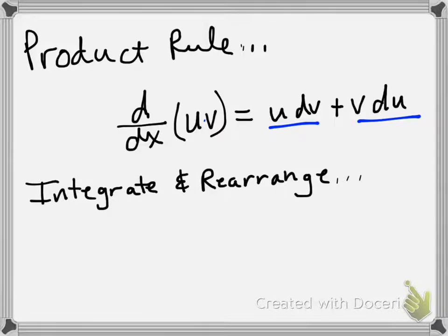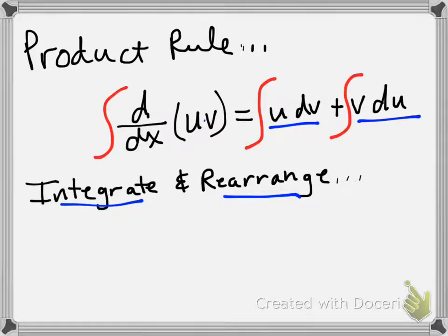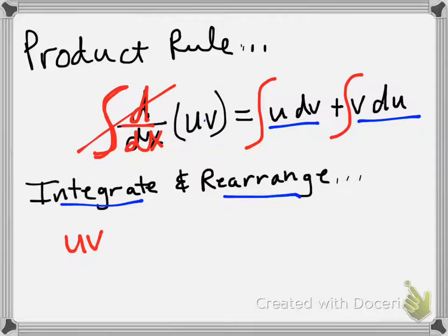Using this rule, we're going to do some integrating and rearranging, and we're going to figure out a sort of product rule for how to integrate. I'm going to start off by integrating all the parts of this formula, and since we're integrating a derivative here, and integration and derivatives are basically opposite operations, that's going to leave me with uv equals the integral of u dv plus the integral of v du.